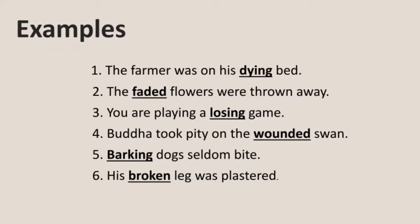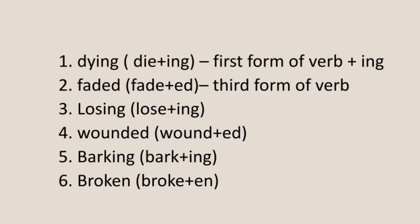In the following examples, words like dying, losing, and barking are formed from the first form of the verb plus -ing. The word 'dying' is formed from 'die' plus -ing. Similarly, 'losing' is formed from 'lose' plus -ing, and 'barking' is formed from 'bark' plus -ing.